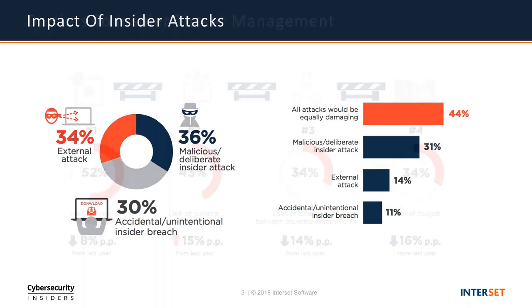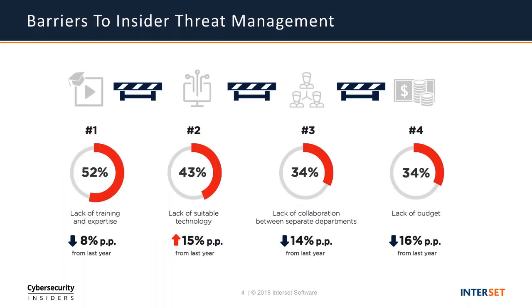We asked our cybersecurity community about the biggest barriers to better insider threat management. For the third year in a row, lack of training and expertise remains the single biggest barrier at 52%. The next critical barrier is lack of suitable technology at 43%, showing a rapid 15 percentage point gain compared to the previous year. This suggests that employee awareness, training, and cybersecurity skills remain an ongoing struggle, as employees are often the weakest link when it comes to insider threats — both as potential threats and as defenders trying to protect organizations.